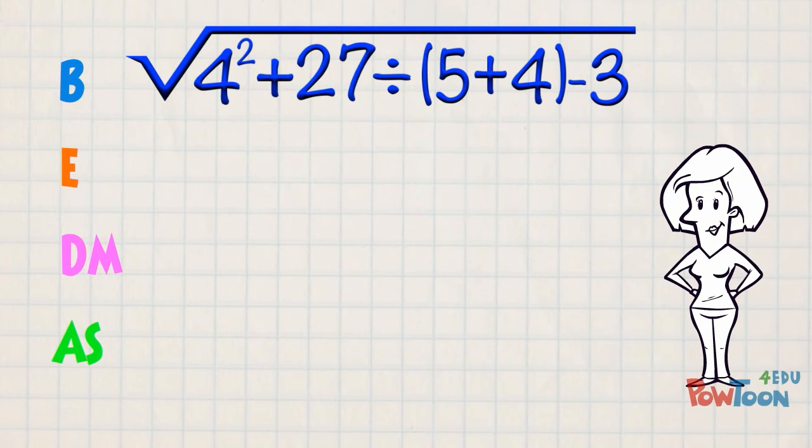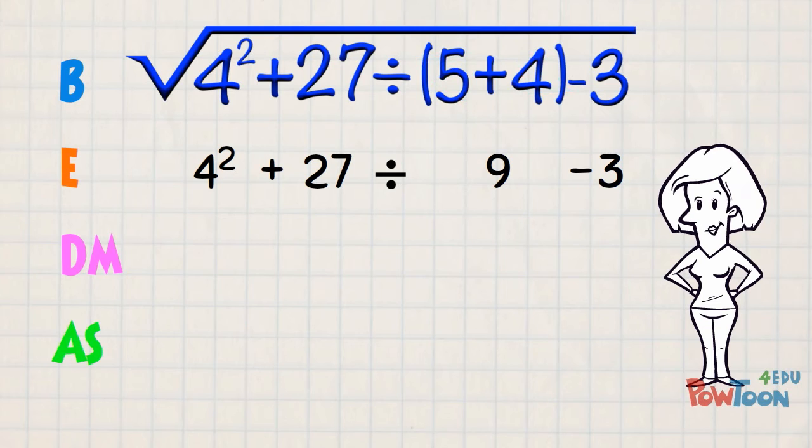BEDMAS tells us brackets first. We have 5 plus 4, that's 9. Transfer the remaining terms perfectly in line so our working out is really clear, and don't forget the radical sign.